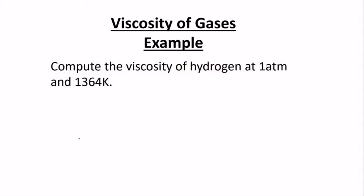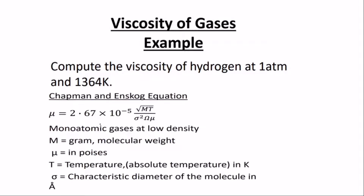This question is about viscosity of gases studied under momentum transport. We are asked to find the viscosity of hydrogen at one atmospheric pressure and at a temperature of 1364 Kelvin. For this, we use the Chapman-Enskog equation, which gives us the viscosity of any gas as equal to 2.67 times 10 to the negative 5, times the square root of